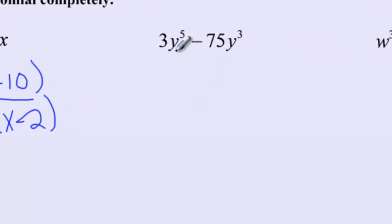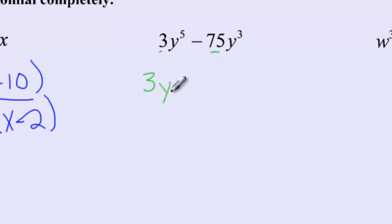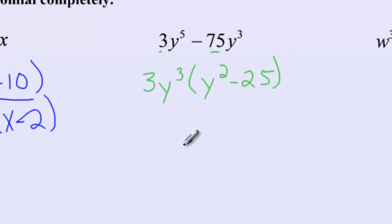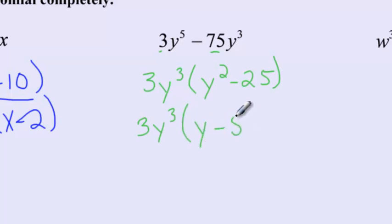Next we have 3y to the fifth minus 75y cubed. 3 goes into both 3 and 75, and y cubed is common, so I factor out 3y cubed, leaving y squared minus 25. Both y squared and 25 are perfect squares, so I use the difference of perfect squares method: 3y cubed times (y minus 5) times (y plus 5). That's our final answer.